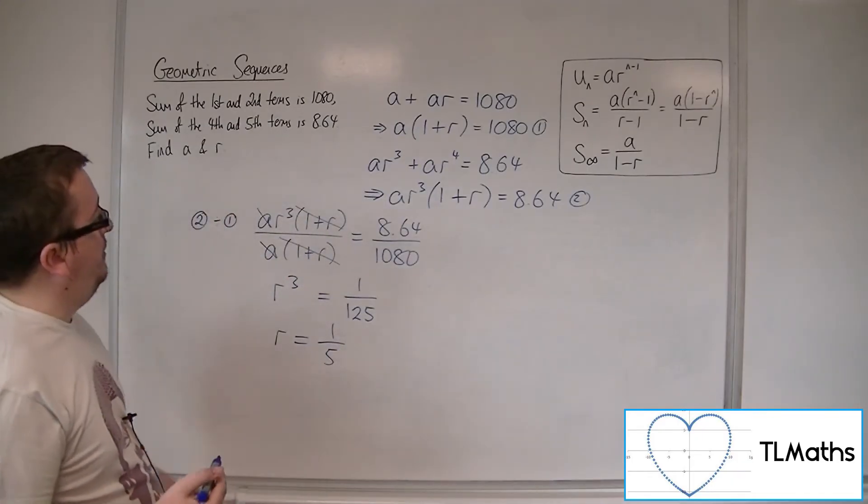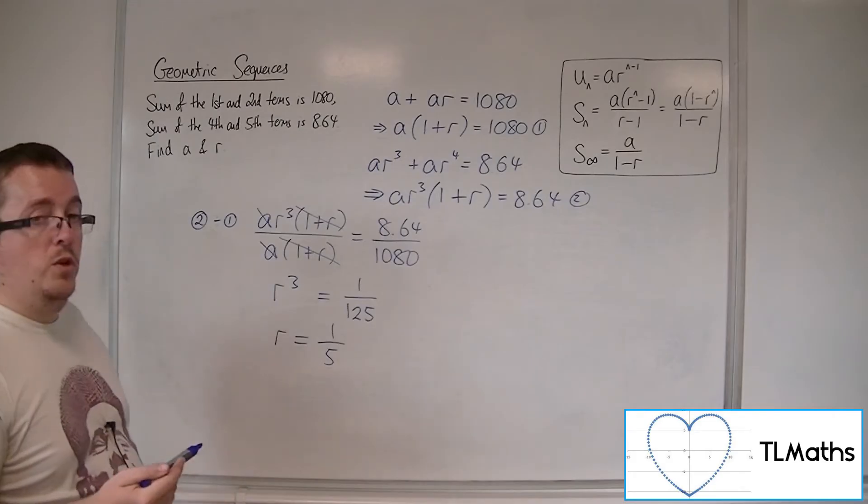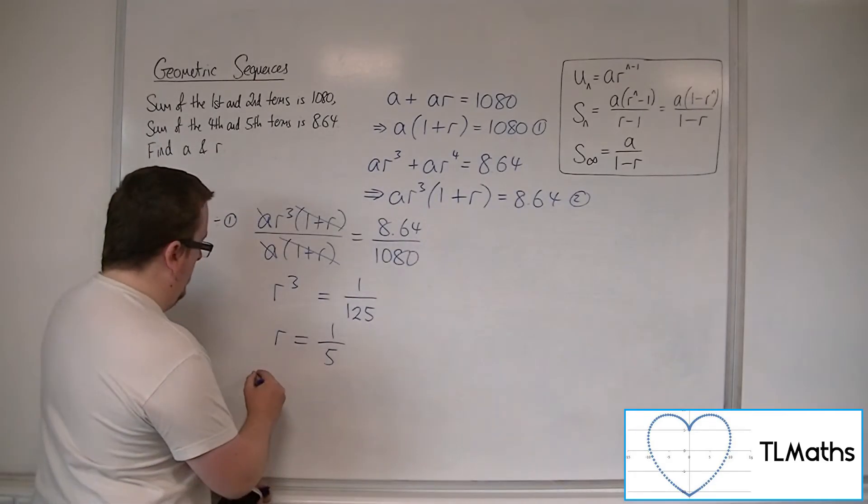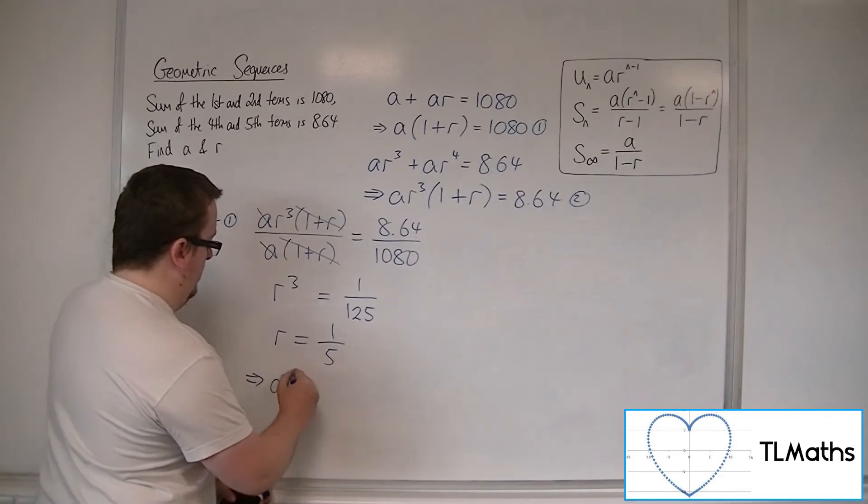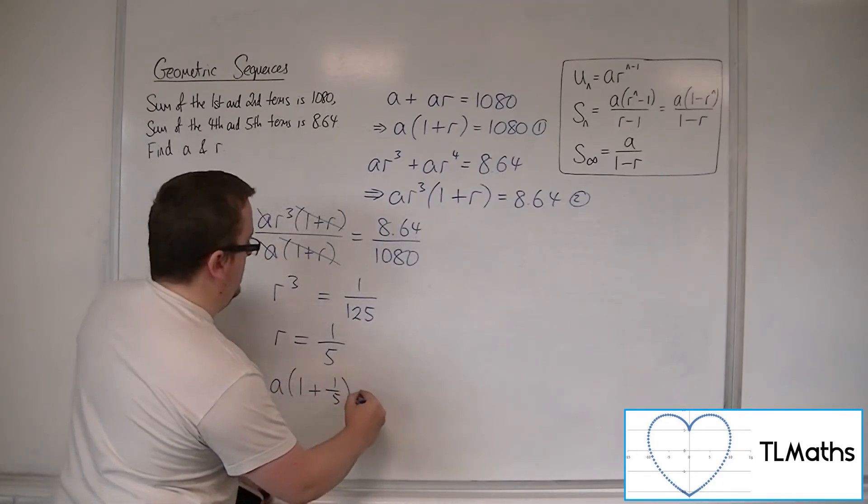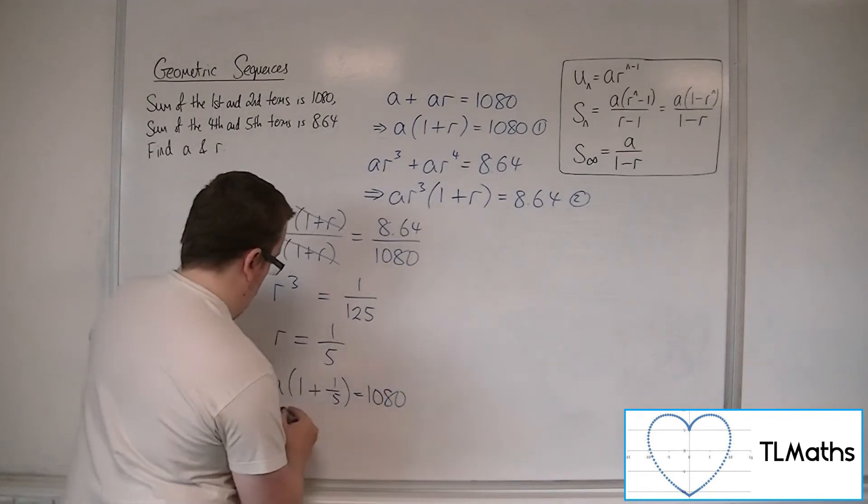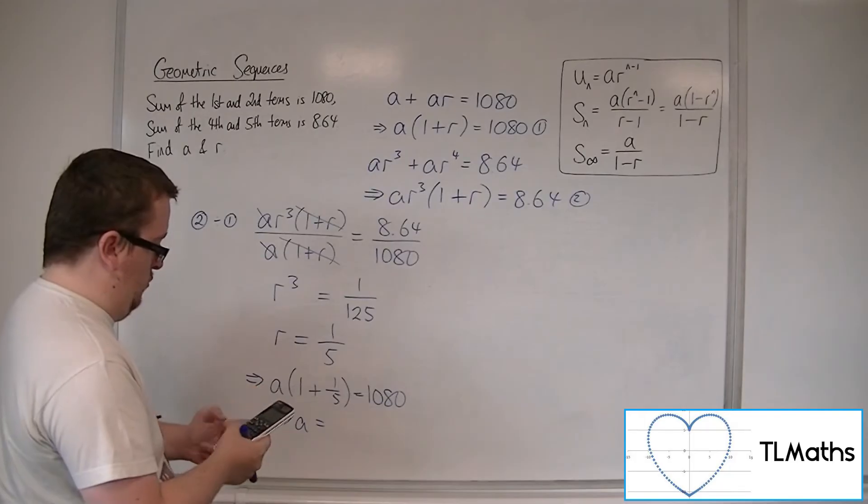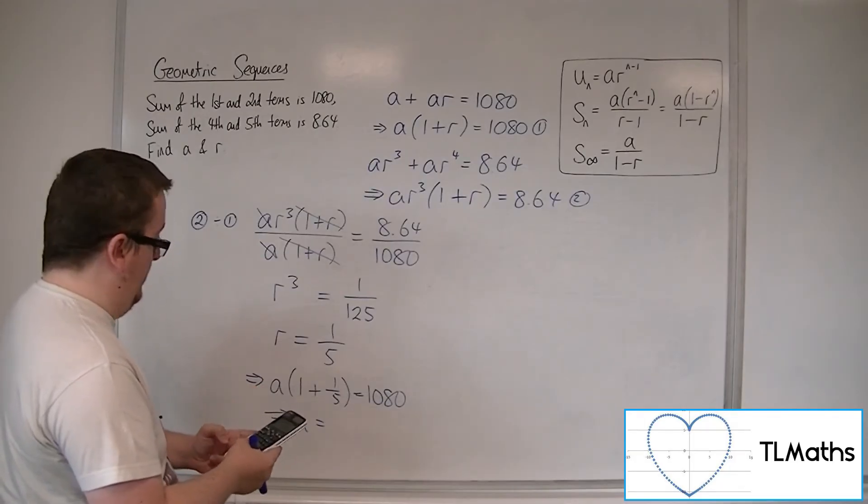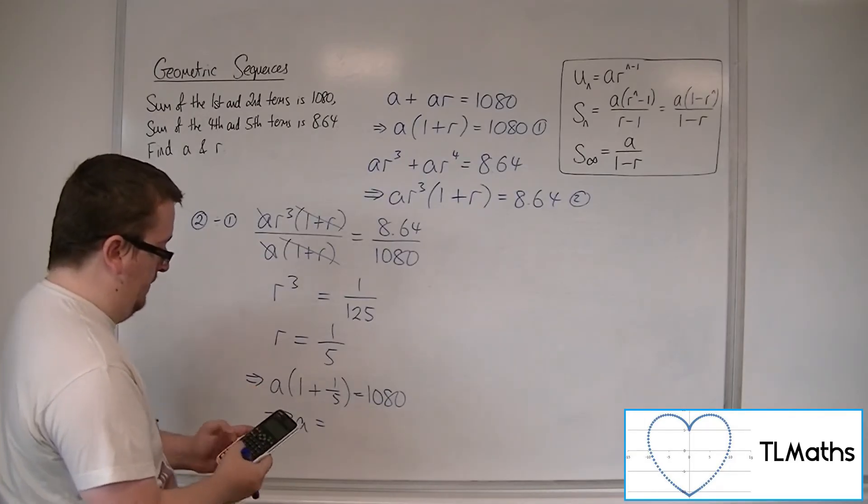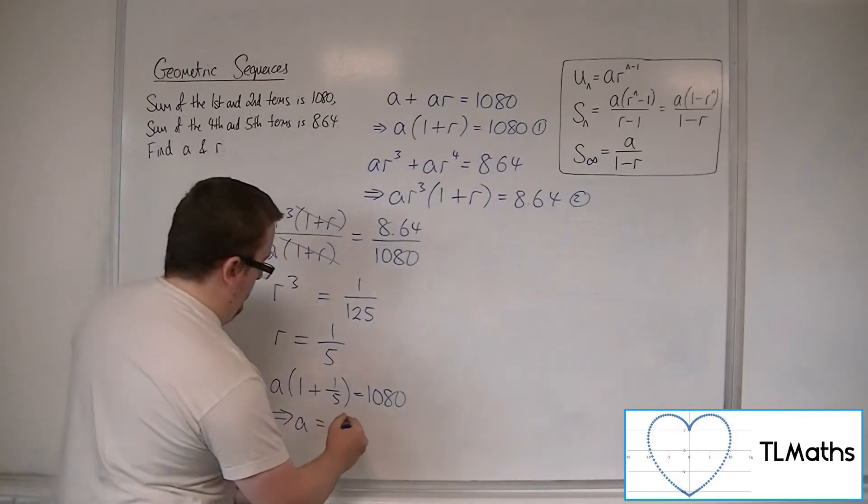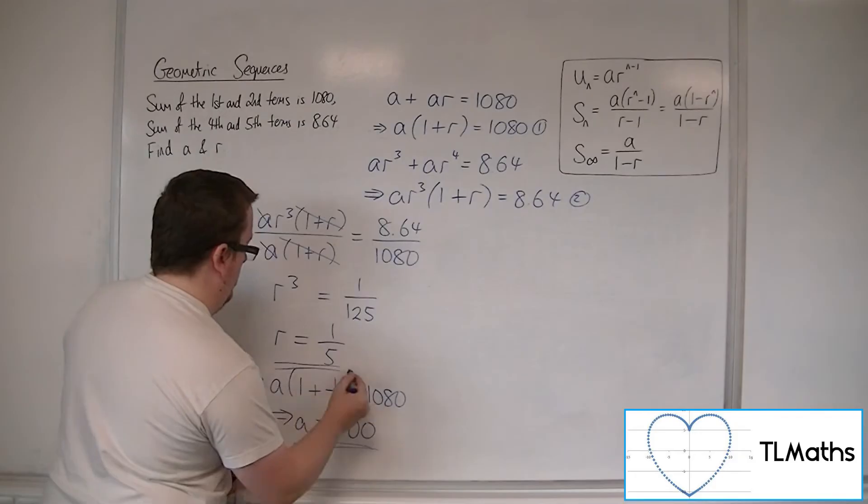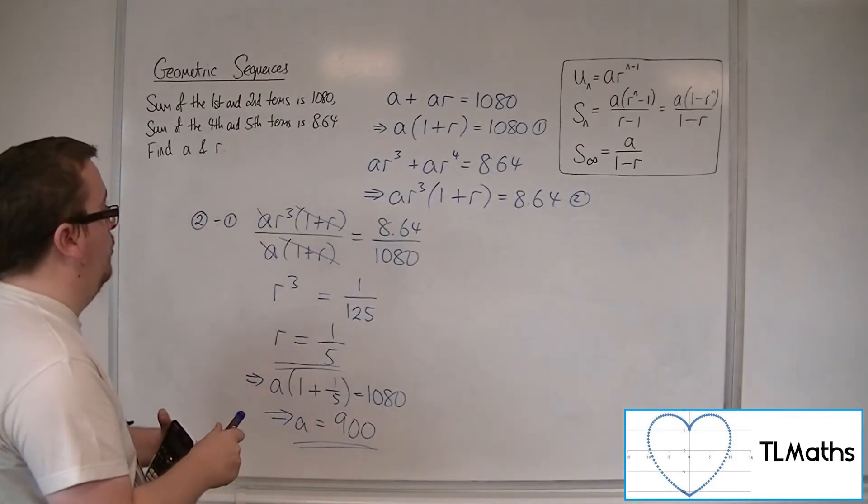If I now substitute that into one of the two original equations, it makes sense to substitute it into number 1. We're going to get A times 1 plus 1 fifth equals 1080. If I do 1080 divided by 1 plus 1 fifth, we get 900. So the first term was 900, and the common ratio was 1 fifth.